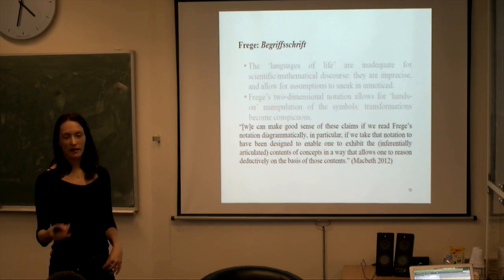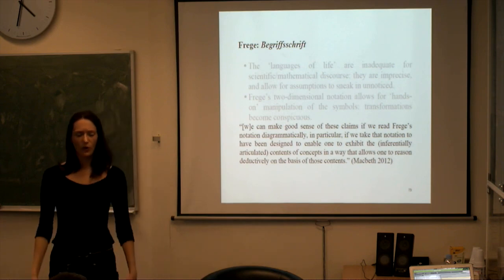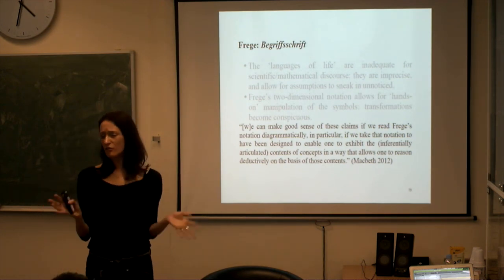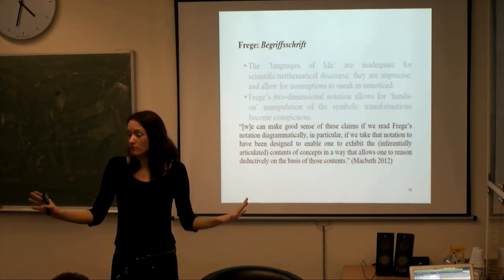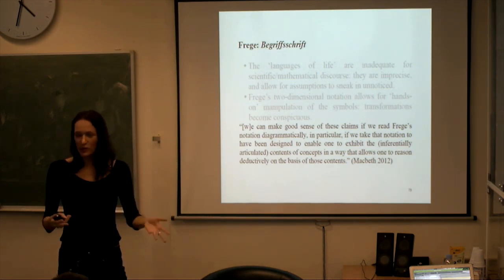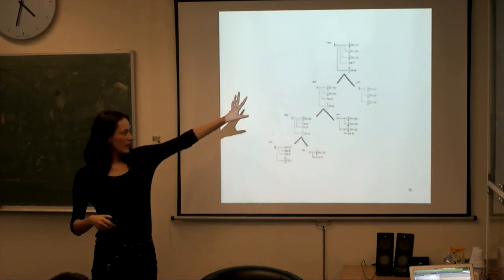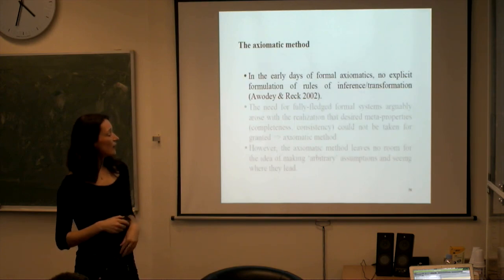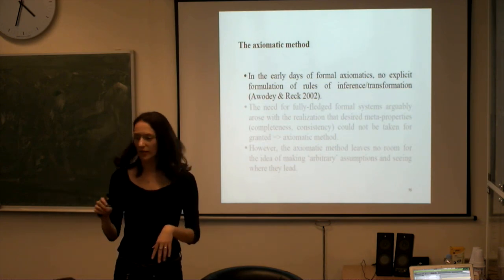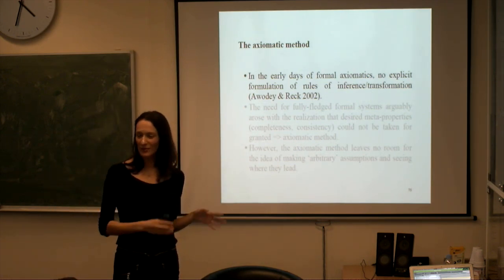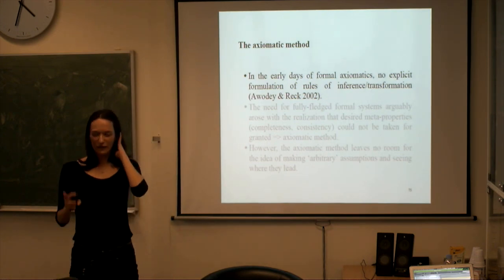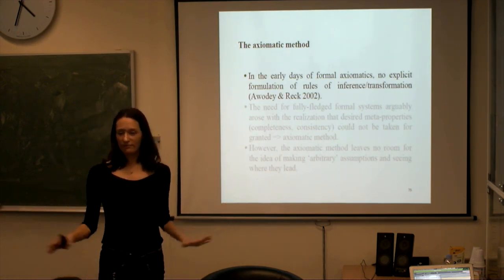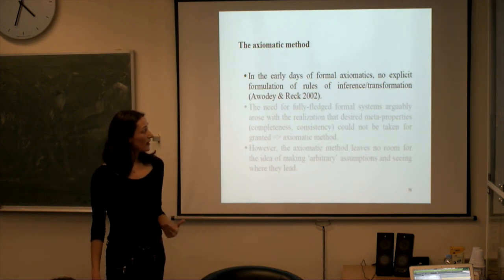From Daniel Macbeth's work: we can make good sense of Frege's notation if we read it diagrammatically — taking that notation to have been designed to enable exhibiting the inferentially articulated contents of concepts in a way that allows one to reason deductively by hands-on manipulation of the notation. Then Russell and Whitehead said they loved Frege's program, but for convenience would use Peano's notation instead — claiming it was immaterial. But it's not immaterial, and that's the upshot of this story.